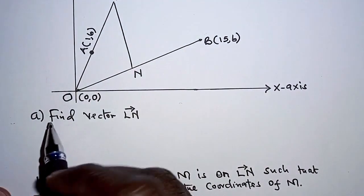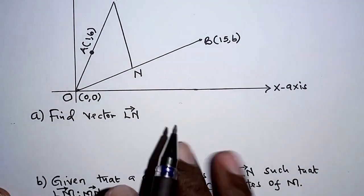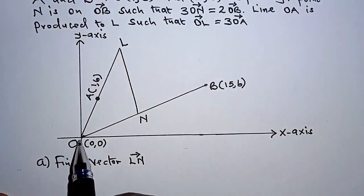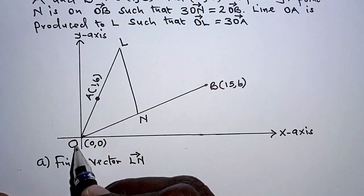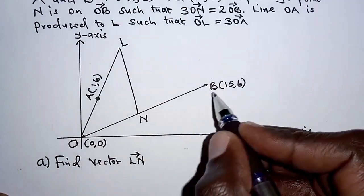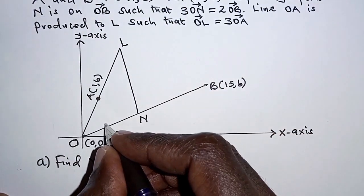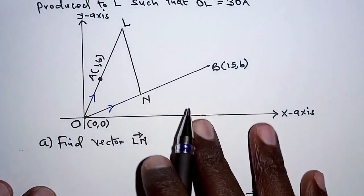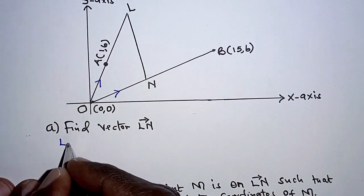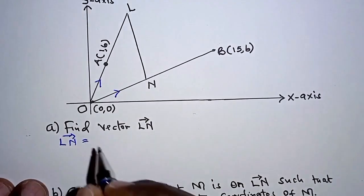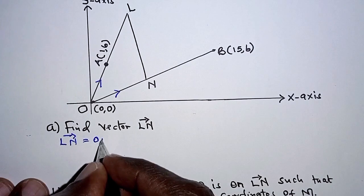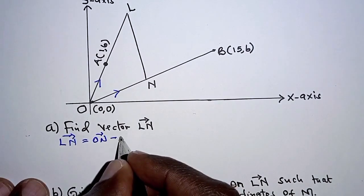Beginning with part A, find the vector LN. We are supposed to determine vector LN. From the diagram, given the origin O, all vectors OB and OL are directed away from the origin. For LN, we use the formula: vector LN equals vector ON minus vector OL, that is the position vector of N minus the position vector of L.